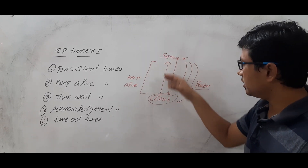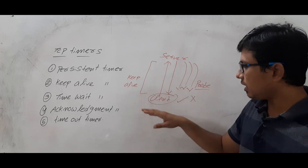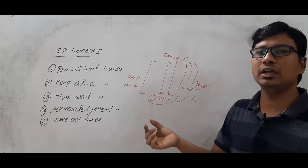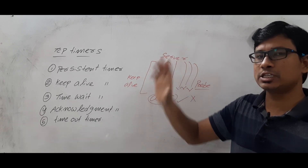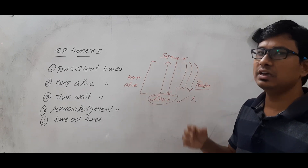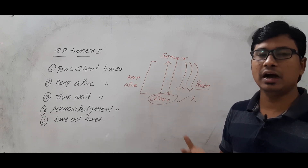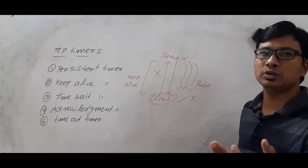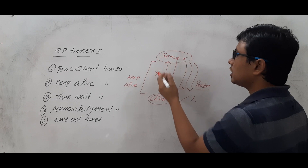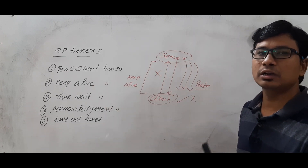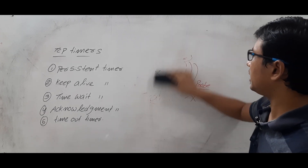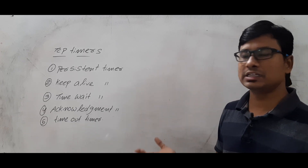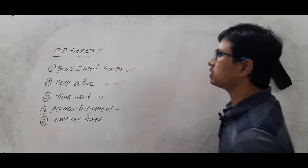The server sets a keep alive timer. Once it expires, it sends 10 probe signals. If the client responds to any of the probe signals, the connection continues; otherwise, the server terminates the connection. These idle connections should be terminated because if idle connections persist, the server cannot respond to other clients. So the keep alive timer is useful to terminate idle TCP connections between any two nodes or devices.